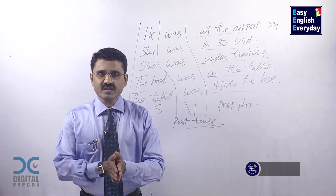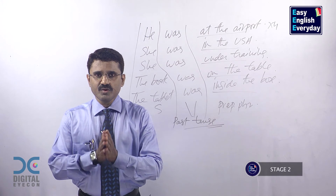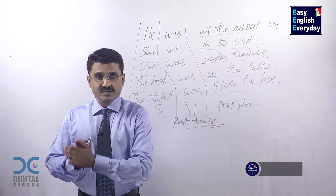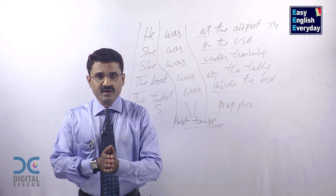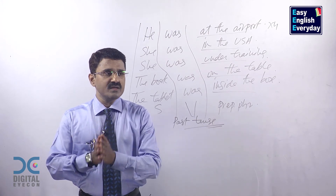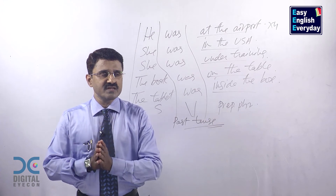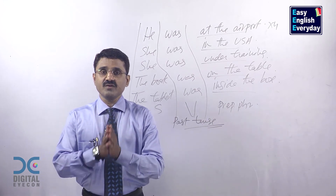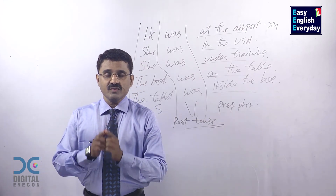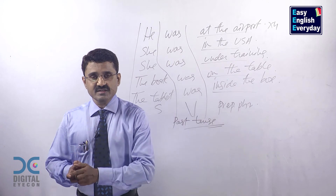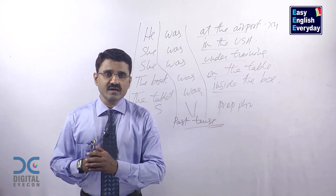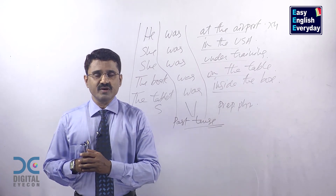The book was on the table. The book was not on the table. Was the book on the table? Wasn't the book on the table? The tablet was inside the box. The tablet was not inside the box. Was the tablet inside the box? Wasn't the tablet inside the box?